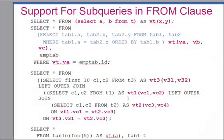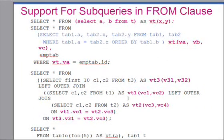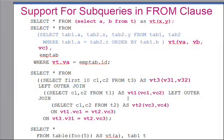Another enhancement in IDS version 11 is that you do not need to write a table function or a function that returns a result set to invoke a function from a FROM clause. Simply put, you can invoke any function — whether it returns a scalar value or a result set — from the FROM clause of a SELECT statement and map it into a virtual table.